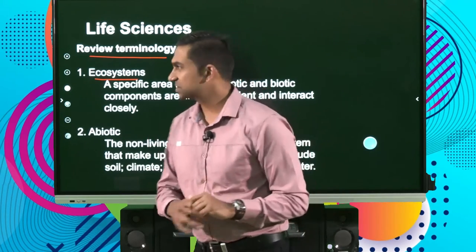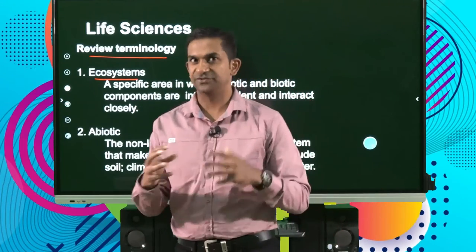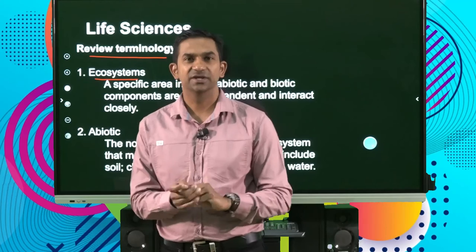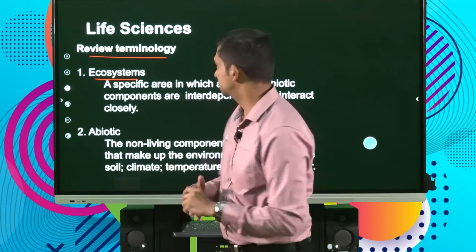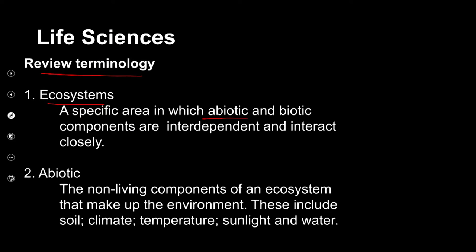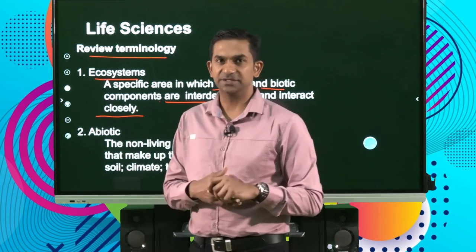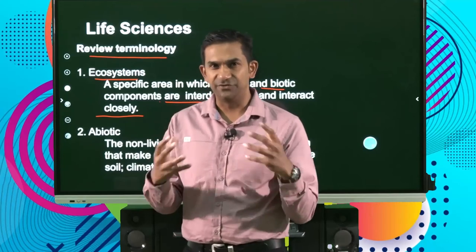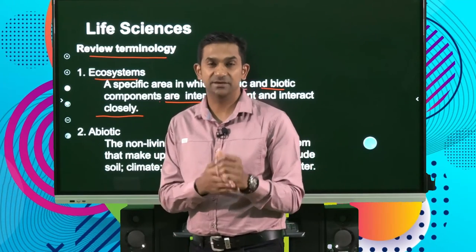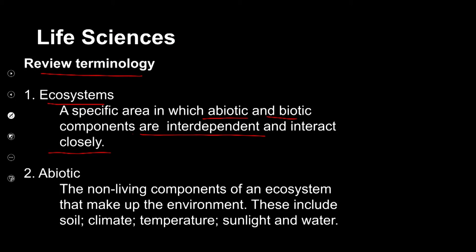When we try to understand ecosystems, remember that a system refers to the interaction of different components. Ecology is the study of environmental factors. When we look at ecosystems, we're looking at the interaction between the abiotic and the biotic components, and how they are interdependent and interact closely. The abiotic factors are the non-living components in the environment.